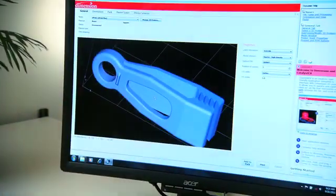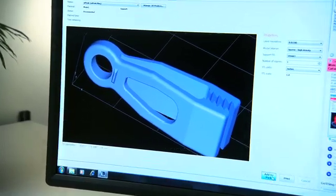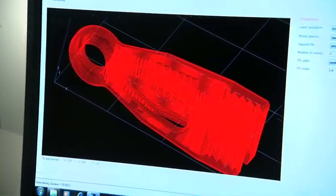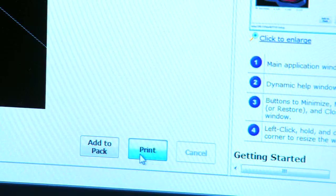And it's easy to use. U-Print SE's print driver automatically converts your CAD designs into print files. Just click print and your model starts building.